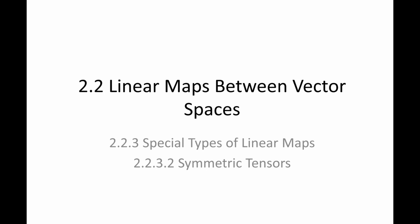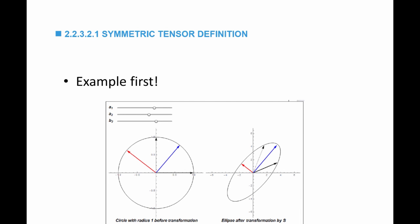The second special type of linear maps we are going to study is symmetric tensors. Symmetric tensors do the following: whenever I have a circle of unit vectors and multiply every vector by the symmetric matrix S, I get an ellipse such that there is always one direction that stays the same and the perpendicular direction also stays the same. The symmetric matrix stretches one direction and contracts or stretches the other perpendicular direction, so you always think of S as a stretch or contraction of the space.